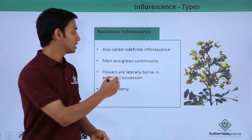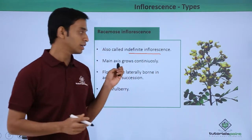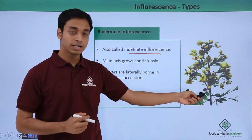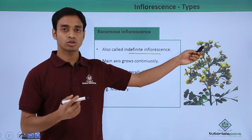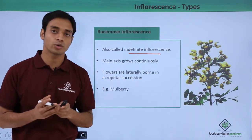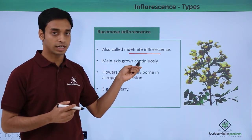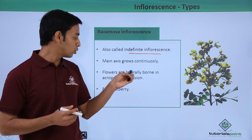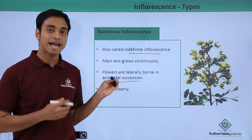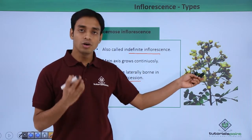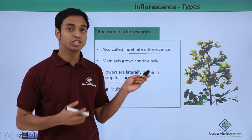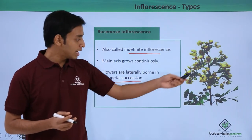The racimose type is also known as indefinite inflorescence. Here, as we can see in the picture, the main axis continuously grows — the growth of the peduncle does not stop. The flowers are laterally borne in the form of acropetal succession. In acropetal succession, the older flowers are found at the base of the axis, whereas the newer flowers are formed at the tip.